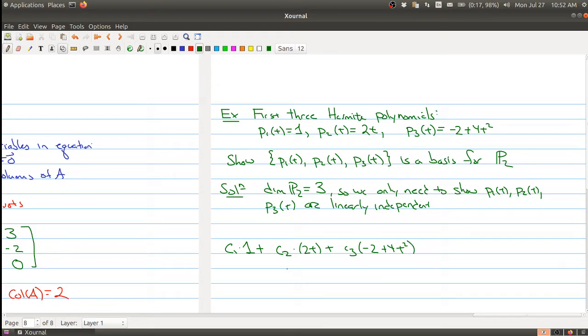C1 times the first polynomial plus C2 times the second polynomial plus C3 times the last polynomial. And we can expand out and collect terms. So we have C1 times 1 minus 2C3 plus 2C2 times t plus 4C3t squared. And we want that equal to the zero polynomial.